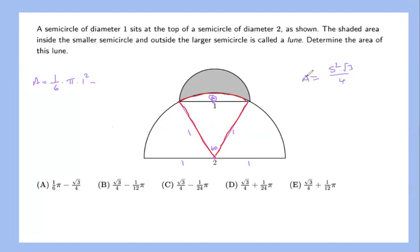If I use that, the side length is one, so that should be one squared times root three over four. So A is just going to be pi over six minus root three over four.